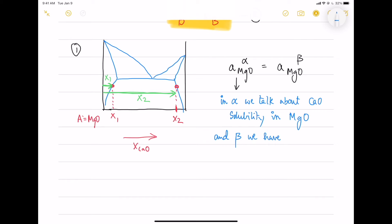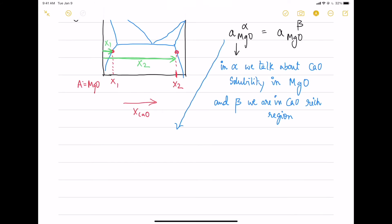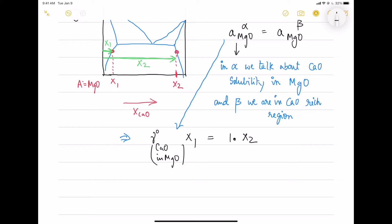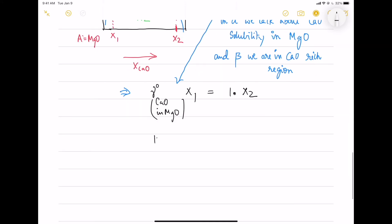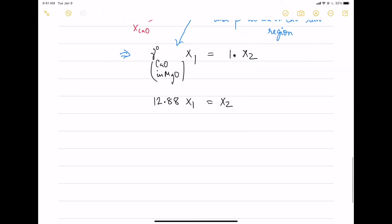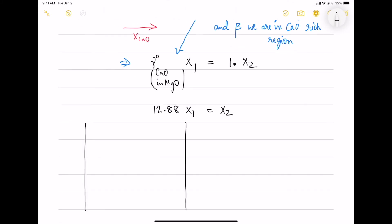So here we talk about the calcium oxide solubility in magnesium oxide because it's limited. That's why here we should use K_m into X, but in beta we are in CaO rich region. So here we talk about the solubility of calcium oxide in MgO. So this is the equation that we get. If you have questions on this, please comment below, I will give more clarity.